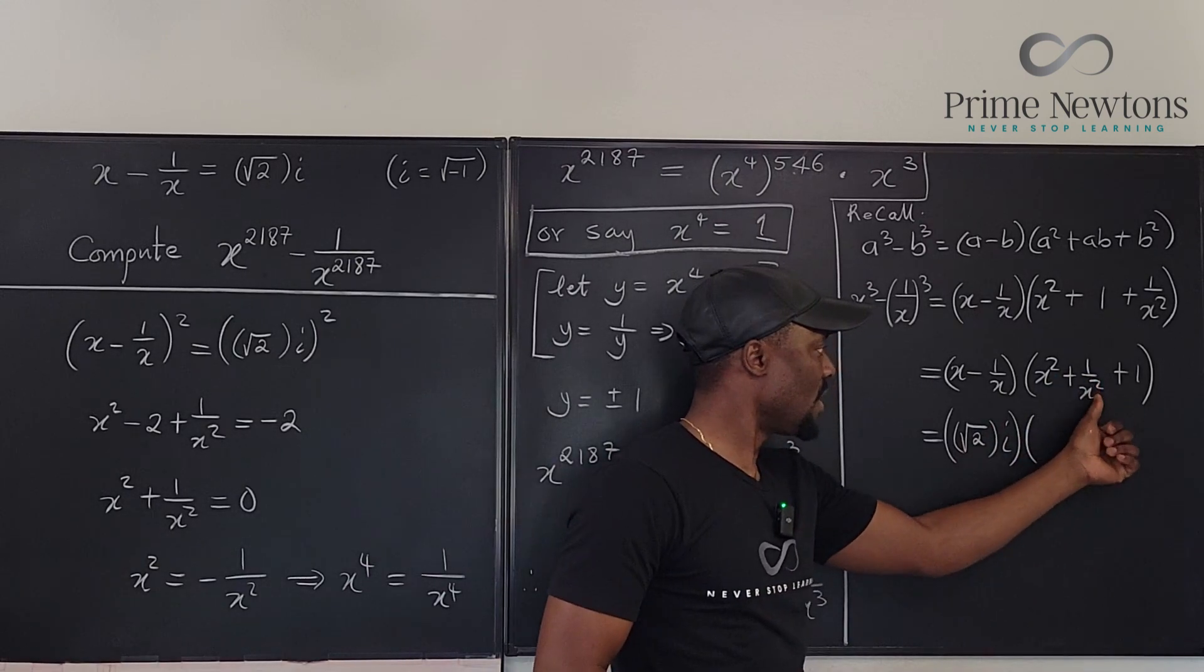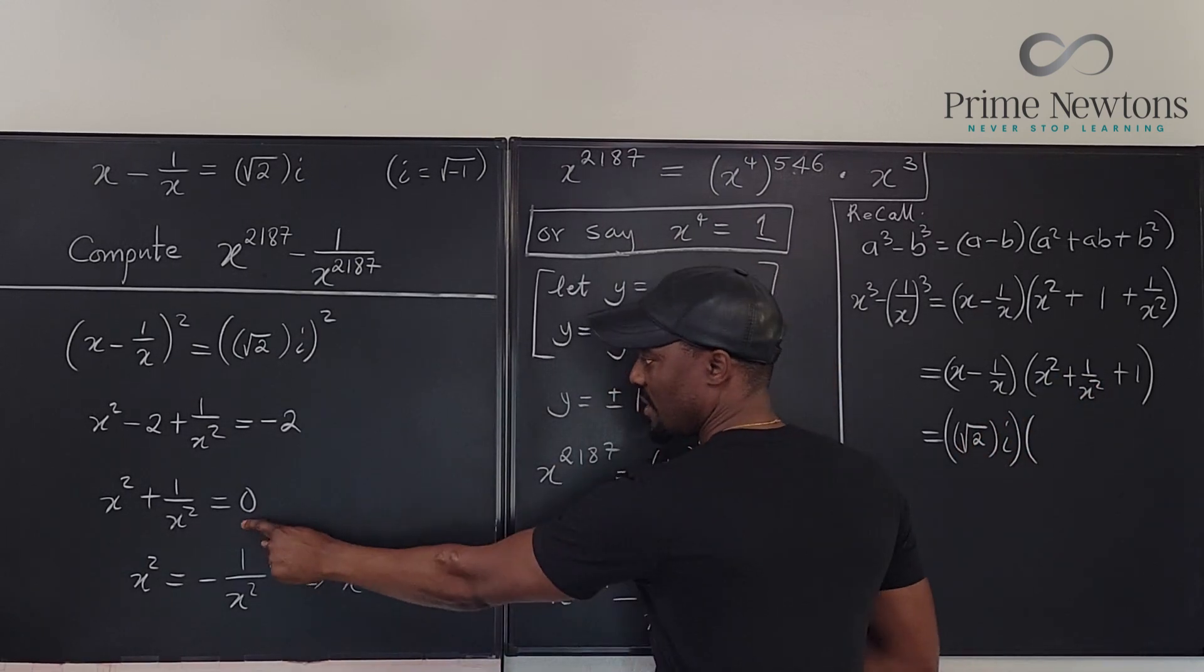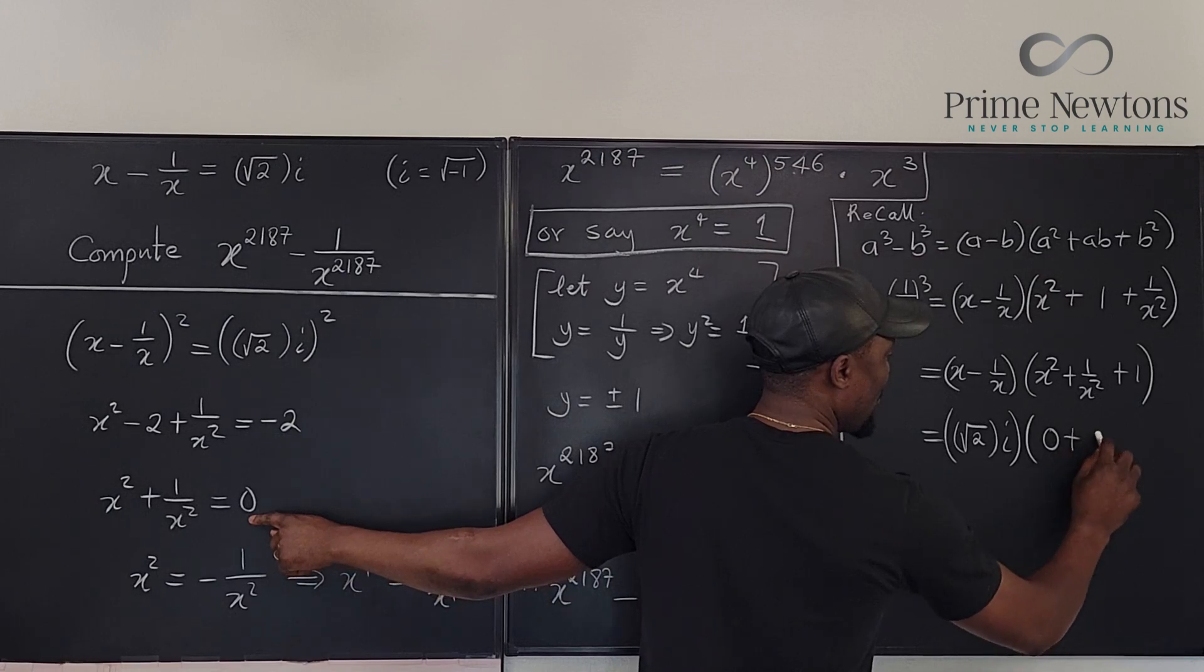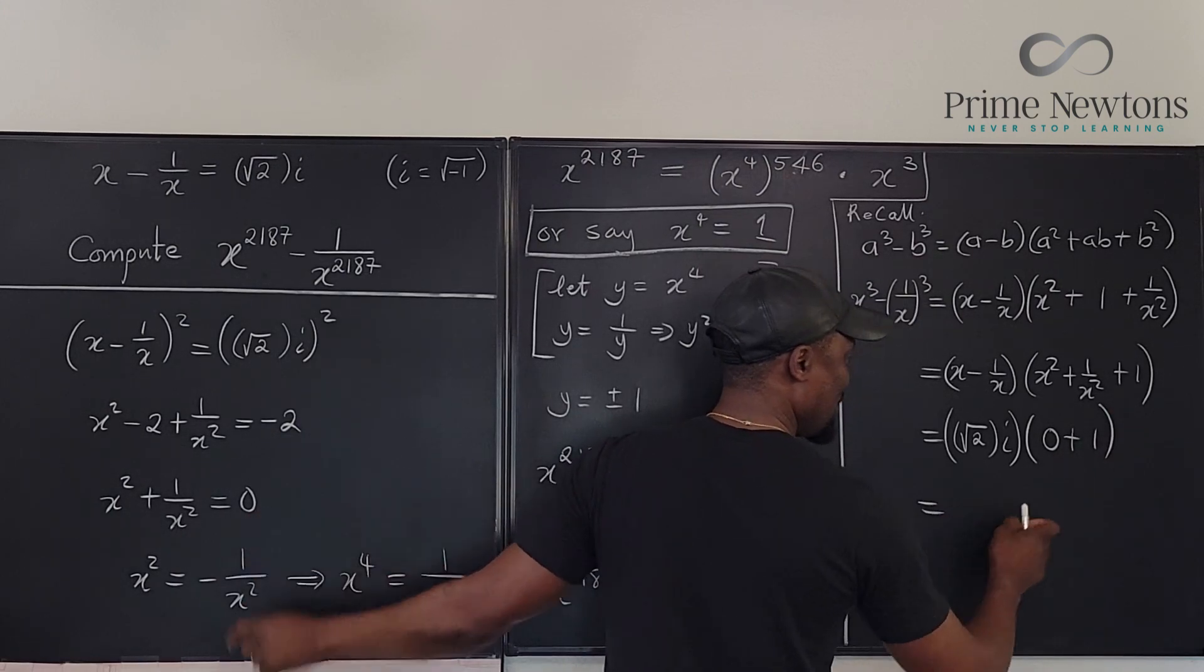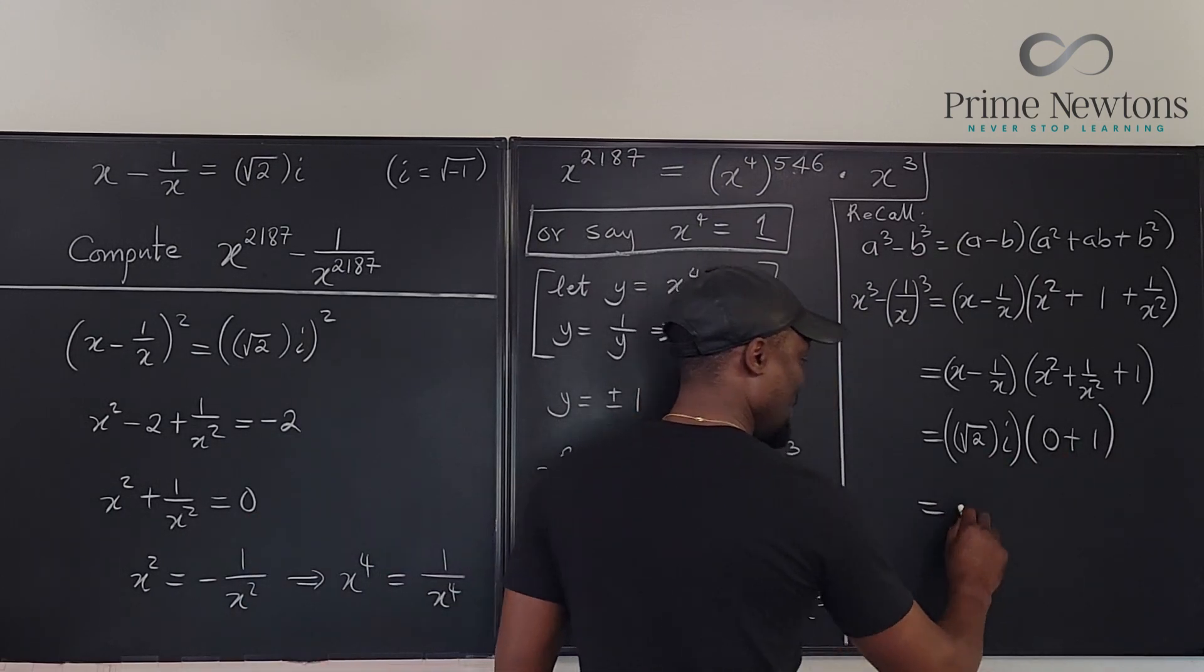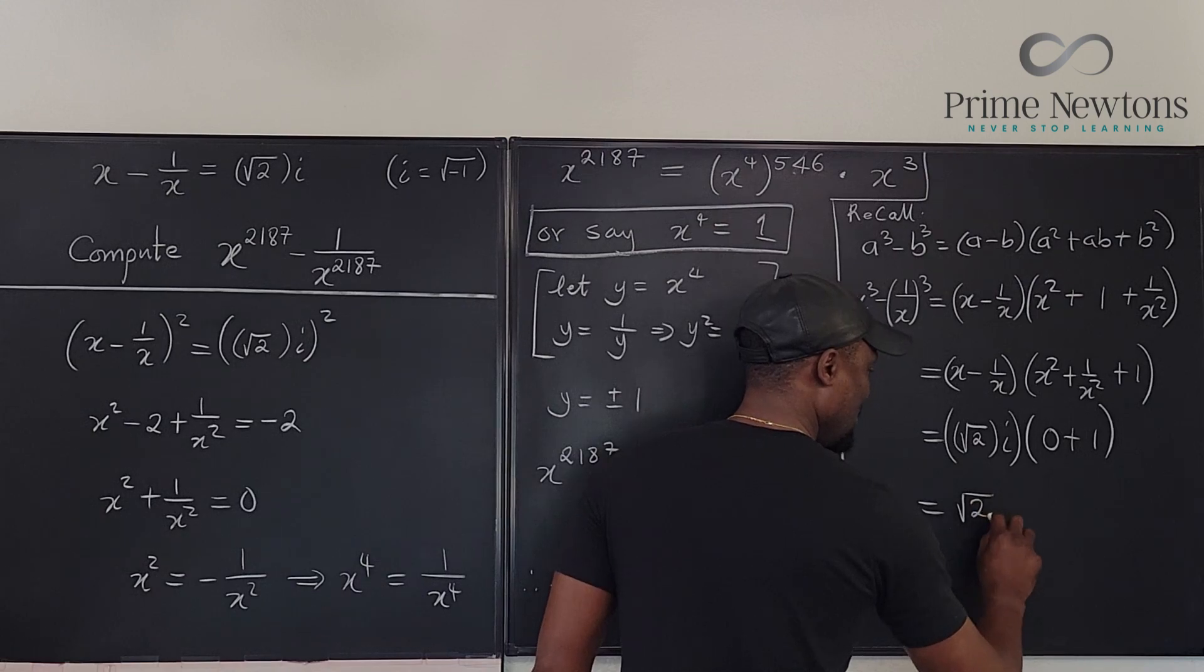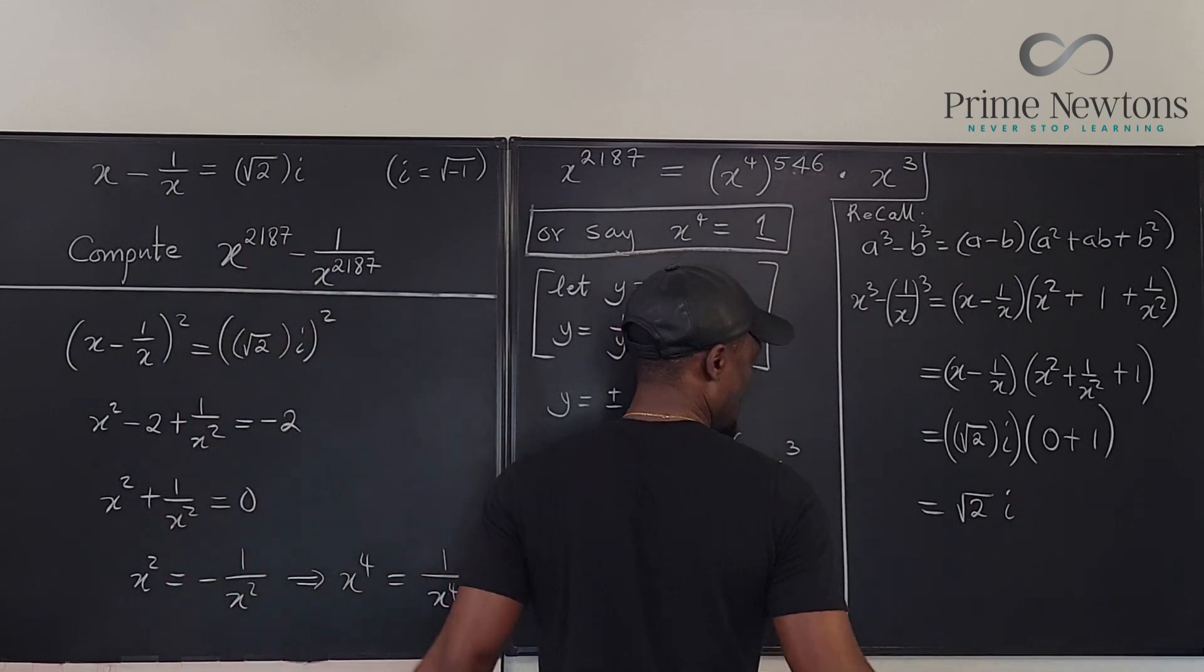Where is it? It's 0. Oh, it's 0 plus 1. So you see, we're just multiplying this by 1. So the answer is square root of 2i, which was the original problem in itself. Ladies and gentlemen, that's it.